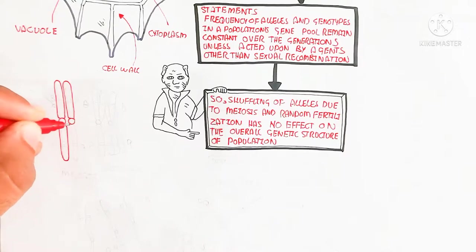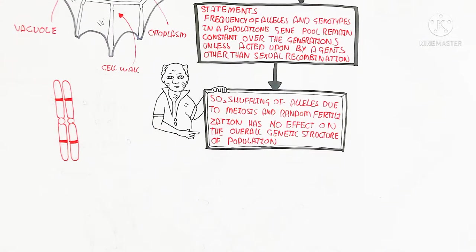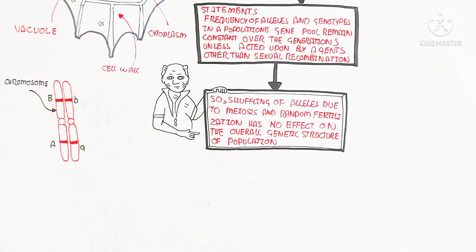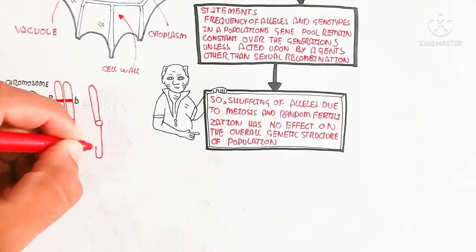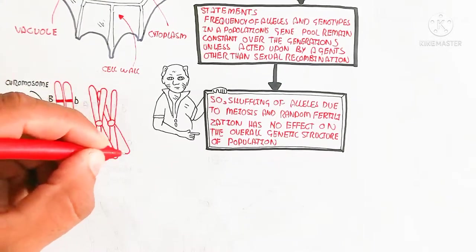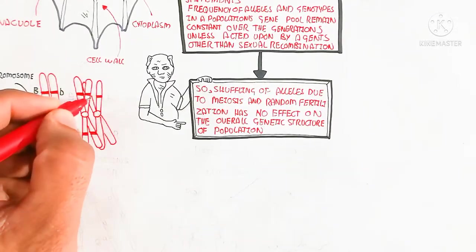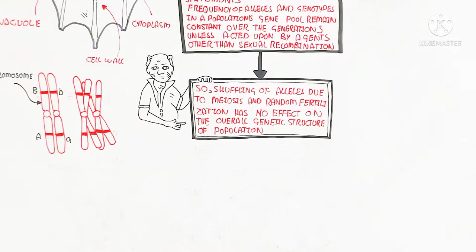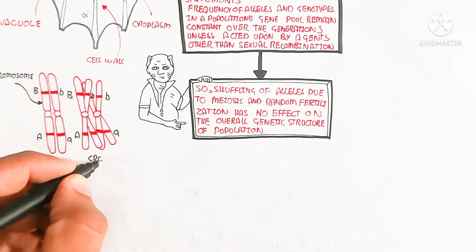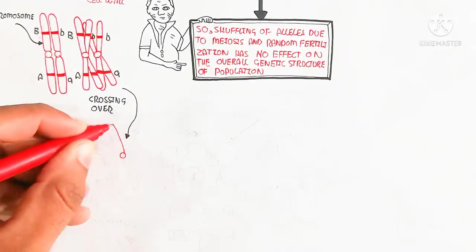Heterozygous condition means one allele is dominant and one is recessive. For example, blue color or green color of a flower shows the recessive and dominant property. Here we will understand gamete formation. The chromosomes exist in pairs — for example, human beings contain 23 pairs. During meiosis, this pair of chromosomes undergoes replication to become doubled, and crossing over occurs for reshuffling of genes.